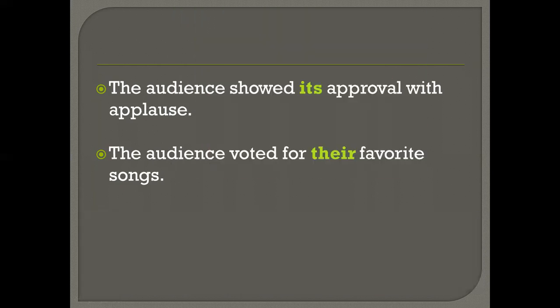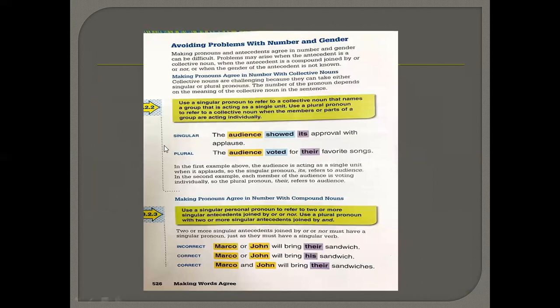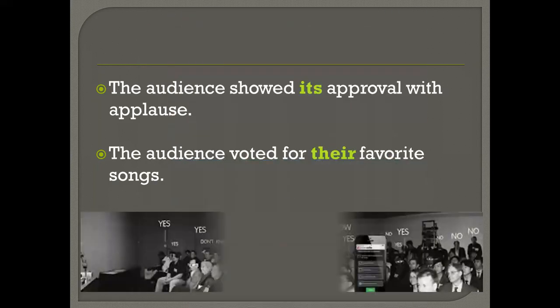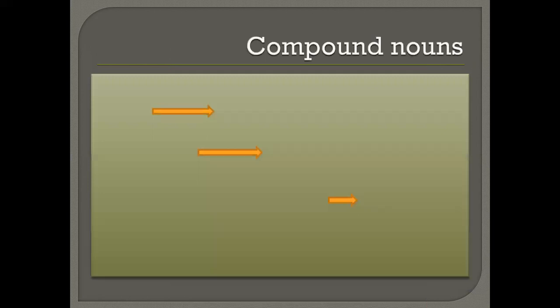Next: making pronouns agree in number with compound nouns. When we have compound nouns joined by 'and,' they are always plural. We always consider them plural and hence always use a plural pronoun. For example, 'Sarah and Ali have brought their books.' We will always use plural pronouns — 'their.'